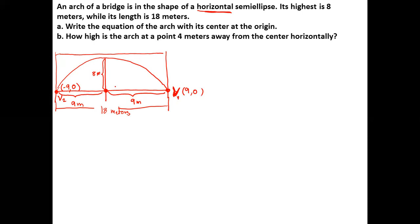The minor axis is the y-axis, which represents the height. The highest point is 8 meters, so we can conclude this is our co-vertex. Co-vertex 1 has coordinates (0, 8). From the center to the co-vertex, the distance equals b, so b equals 8 meters. From the center to the vertex equals a, so a equals 9 meters.